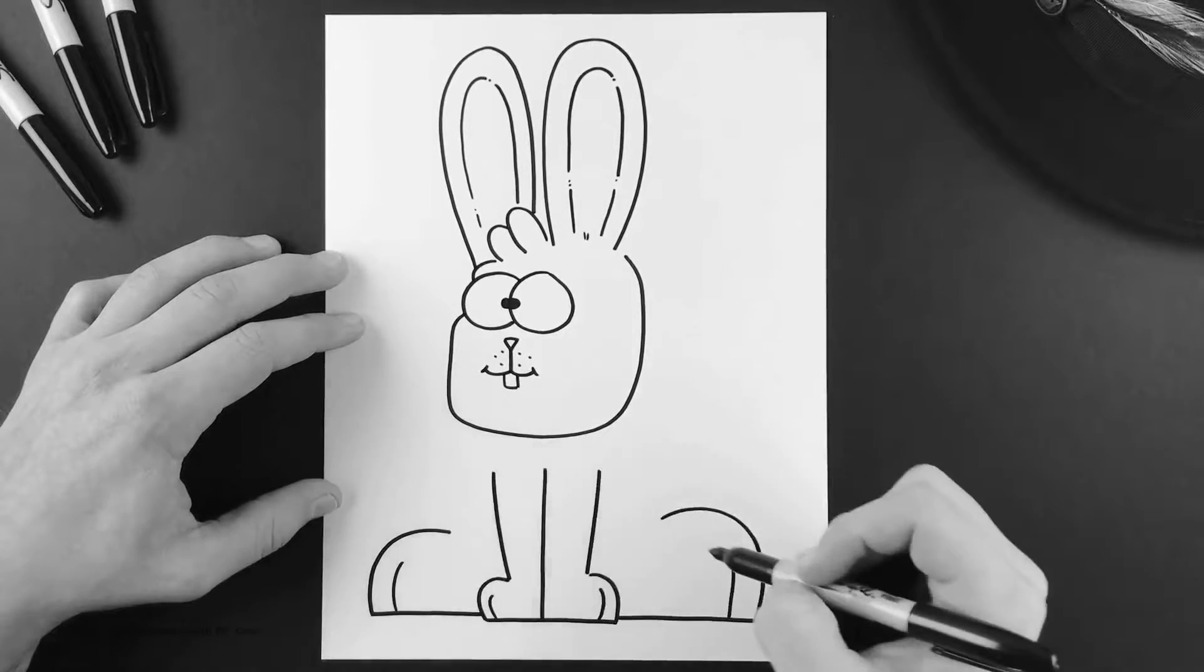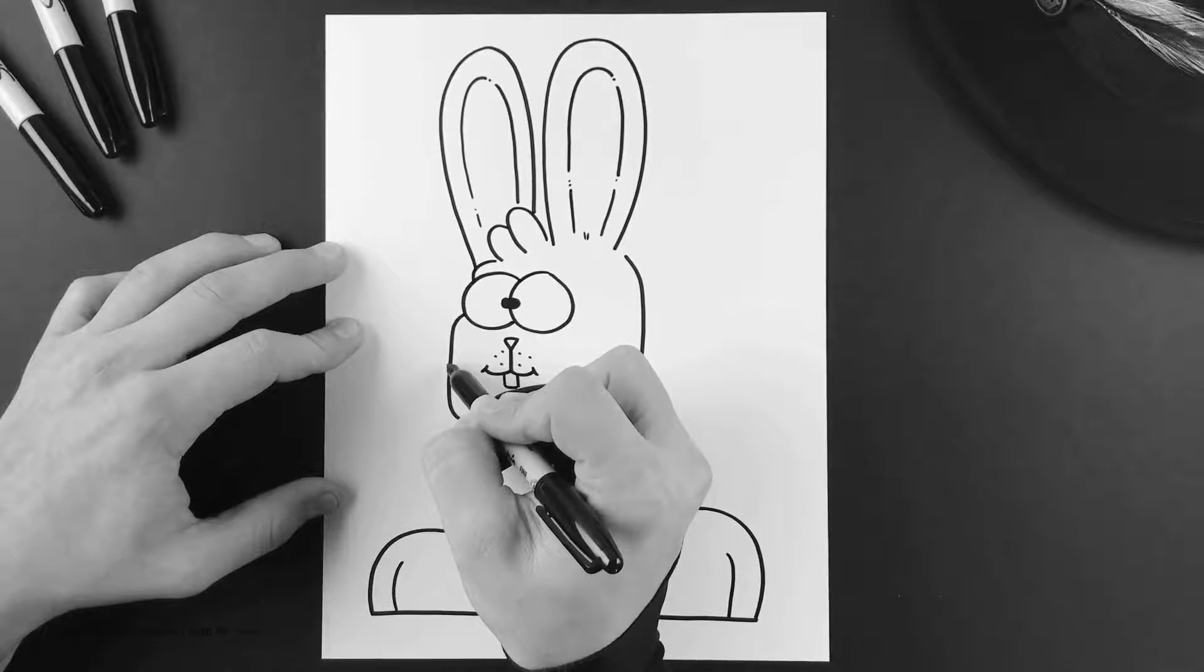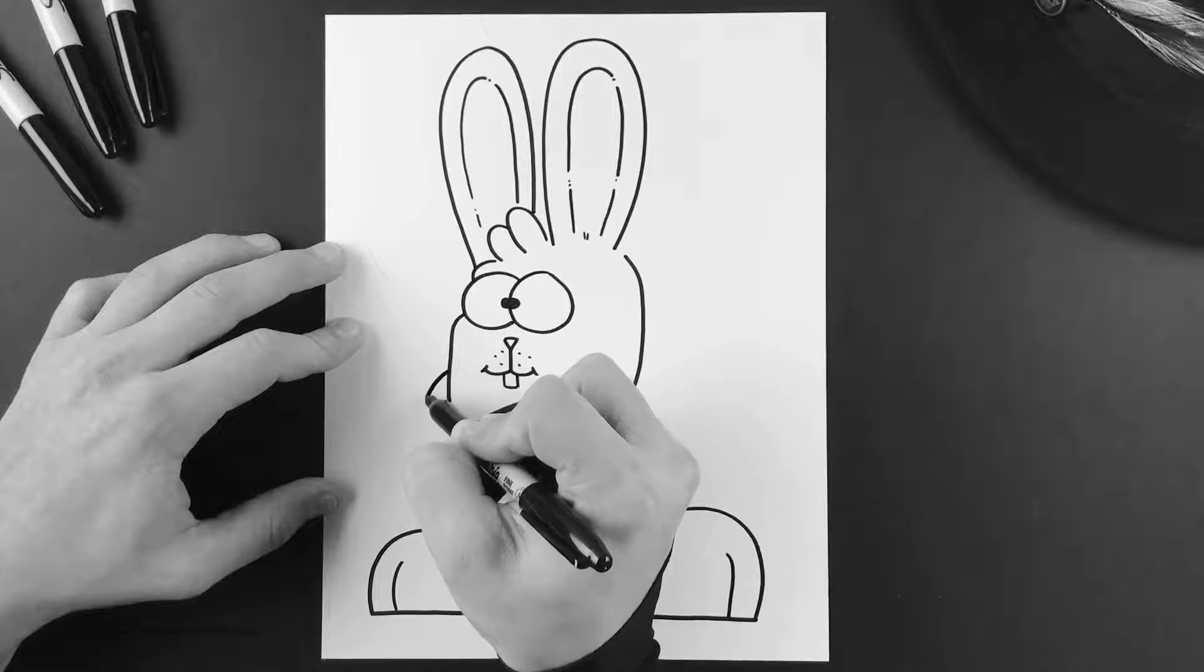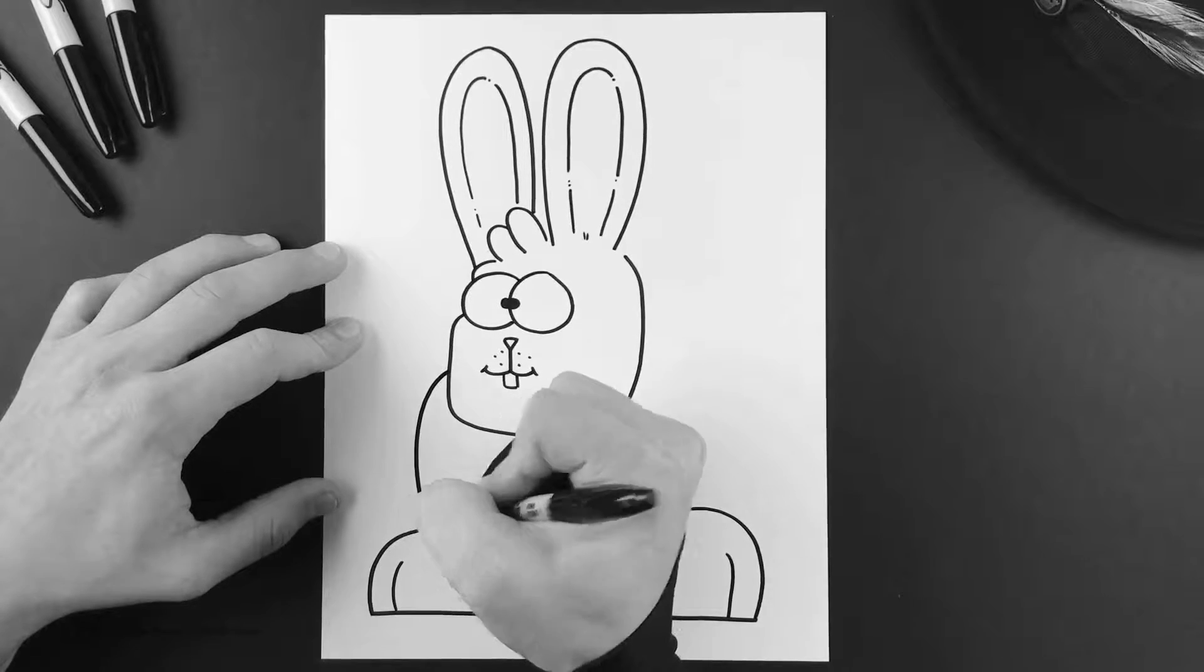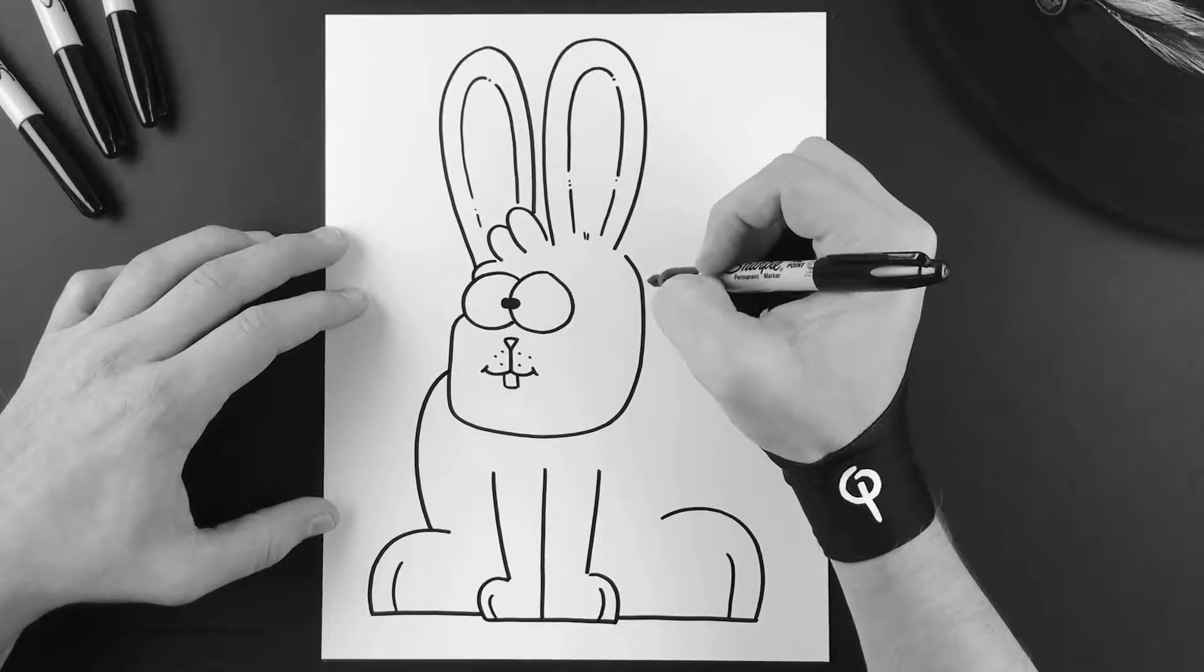We're gonna repeat the same step over here. The bigger the better, nice big paws. Then add his little toe. So now we're just gonna connect these two pieces to his head. Coming off his cheek we're gonna add one curved line coming into his leg, and then off the top of his head we're gonna do the same thing.